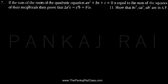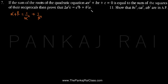The problem says that if the sum of roots of a quadratic equation, that is alpha plus beta, is equal to the sum of squares of their reciprocals — that is 1/α² + 1/β² — then we have to prove that 2a²c = c²b + b²a. And taking this further, we have to prove that bc², ca², and ab² are in AP.